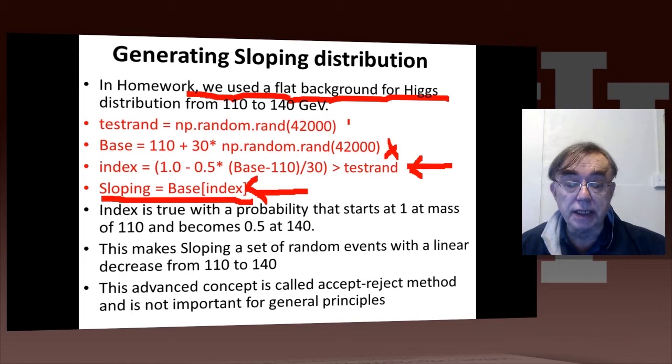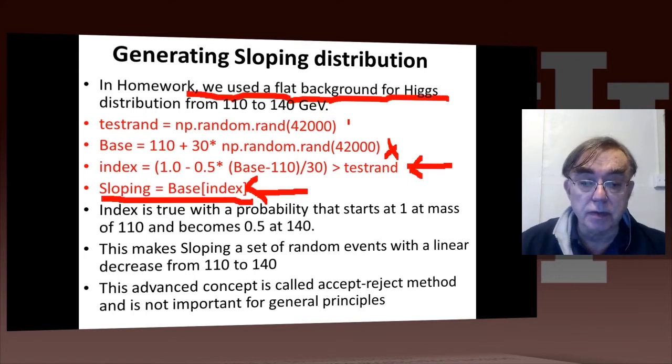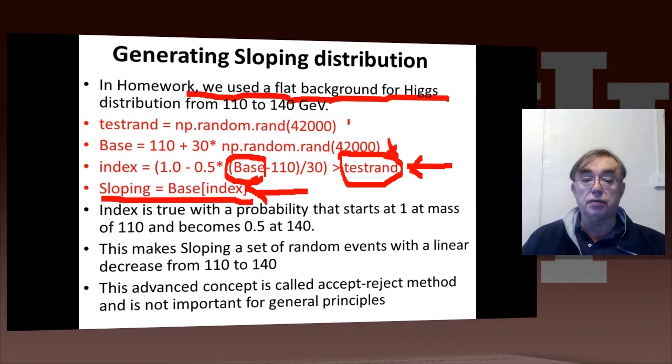So what I do there is I take an index, and then I compare it with a set of 42,000 random numbers. And I do this, remember this one, we have 42,000 values here. We have 42,000 ones here, so every value of base is paired to a new random number.